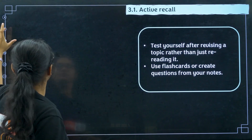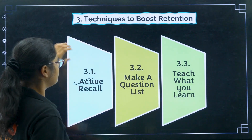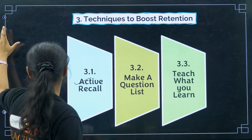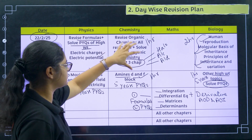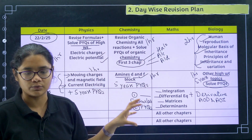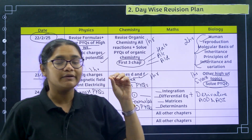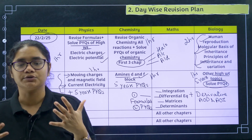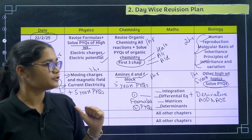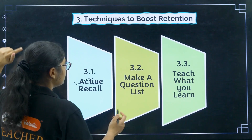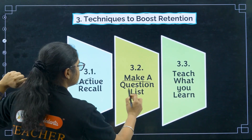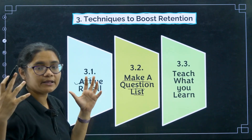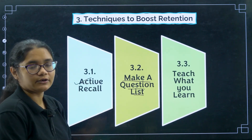This is the best way, and in this process you will tend to forget many things — when you forget, you look again and remember it for a longer duration. That is the first retention technique. Second, make a question list. When you have solved previous year questions and mock tests during revision, there will be many questions you got wrong. Write those down and revise them again and again — those questions will become stronger in your memory.